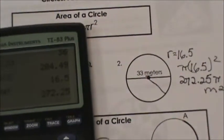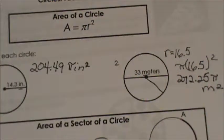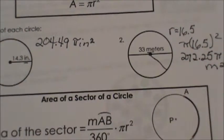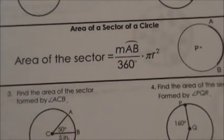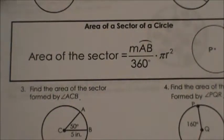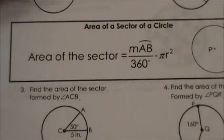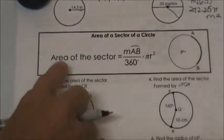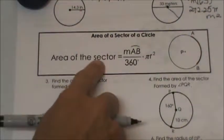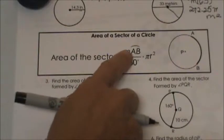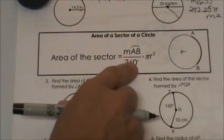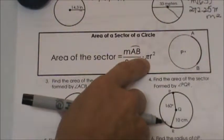So that should be all common knowledge for you — you should be comfortable with finding the area of a circle. Now let's move on to sector area. The area of a sector is given by the formula: the measure of the arc over 360 times pi r squared.